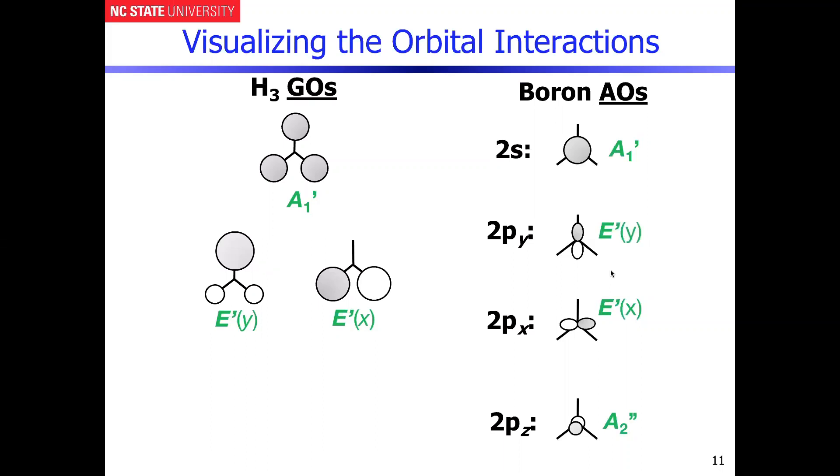We know that we have the 2s orbital, and that's going to be A1' symmetry. That's going to necessarily make the bonding and anti-bonding combination. All we're going to have to do is take in-phase and out-of-phase combinations of those two. So those will give us bonding and anti-bonding interactions.